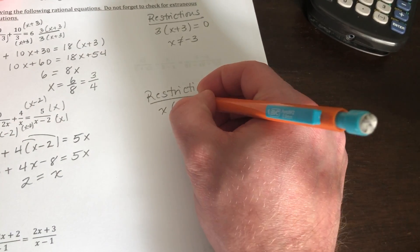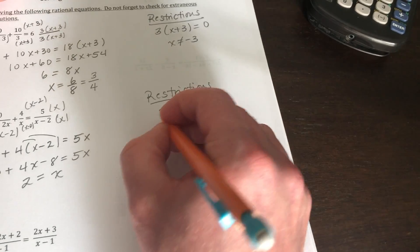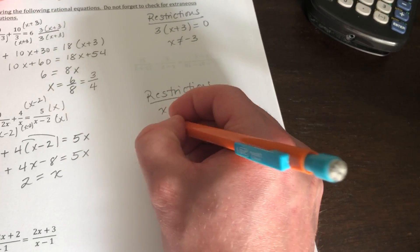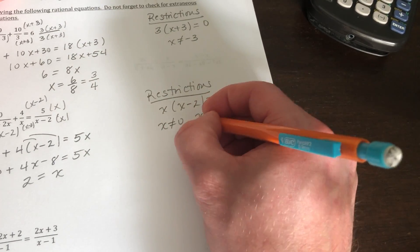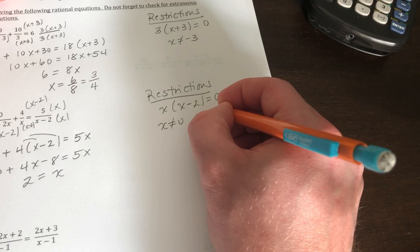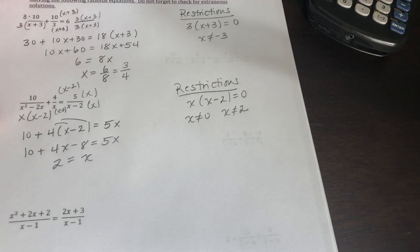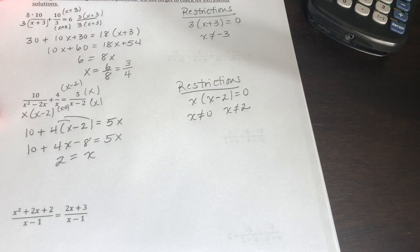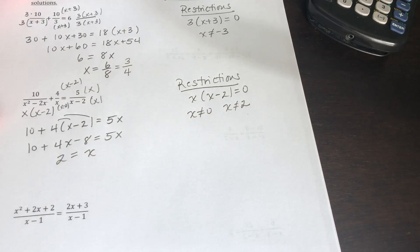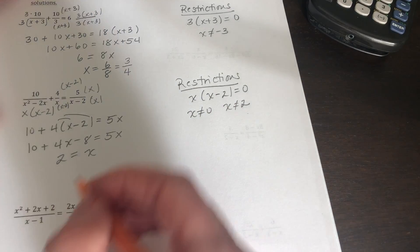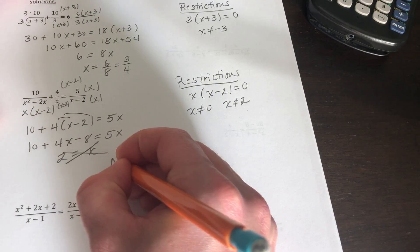Our restriction is going to be our least common denominator: x times x minus 2 is equal to 0. So x cannot equal 0 and x cannot equal 2. Going back to look at our answers, our answer of x equals 2 falls into the restrictions. So we cross it out and we say no solution.